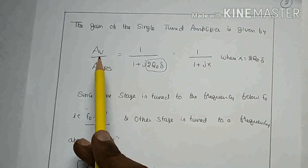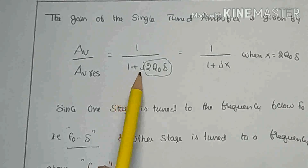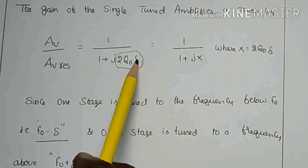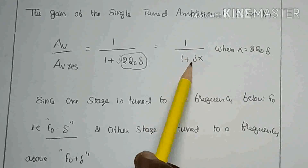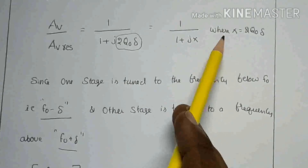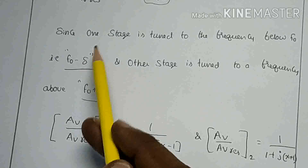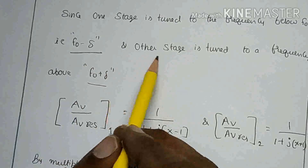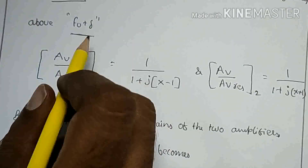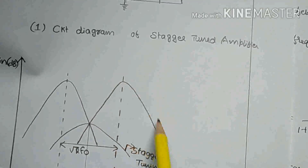The gain of a single-tuned amplifier is given by the voltage gain divided by AV at resonance, which equals 1 over (1 + j·2·Q₀·δ), where Q₀ is the quality factor at resonance and δ is the fractional frequency deviation, equal to 1 + j·x, where x = 2·Q₀·δ. One stage is tuned to the frequency below F-naught, that is F-naught minus δ, and the other stage is tuned to a frequency above F-naught, that is F-naught plus δ.